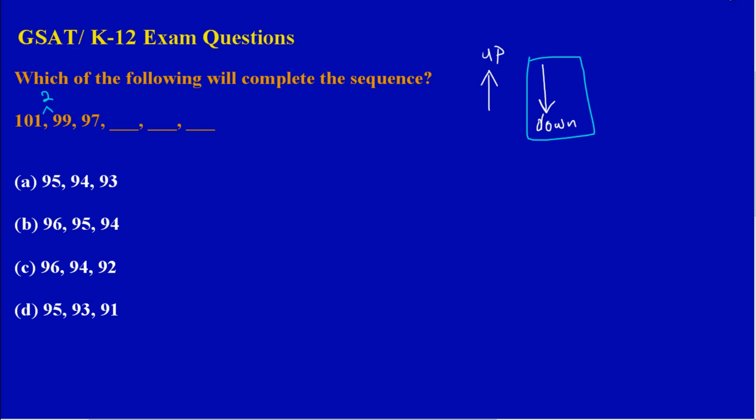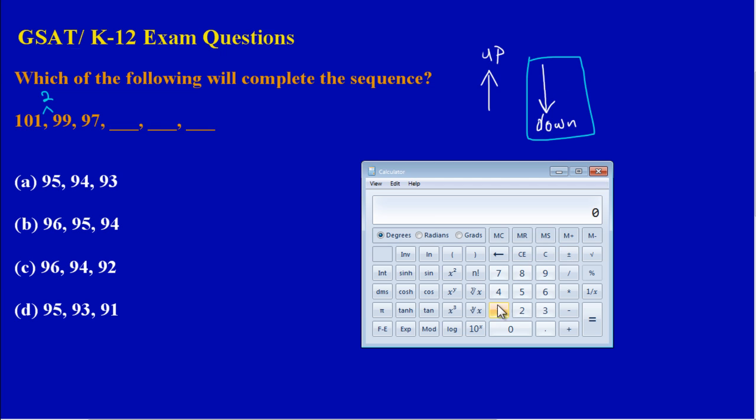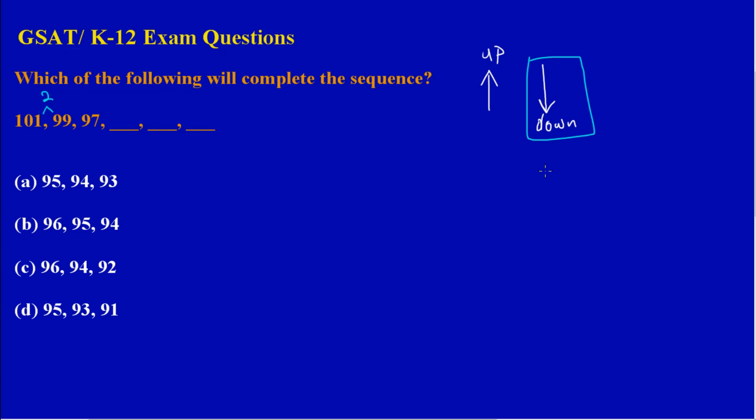We could do this quickly on our calculator. Let's pull up our calculator. If I have 101 minus 99, that would equal 2. Good. Now let's check again between 99 and 97 to see if we are decreasing by 2 again.